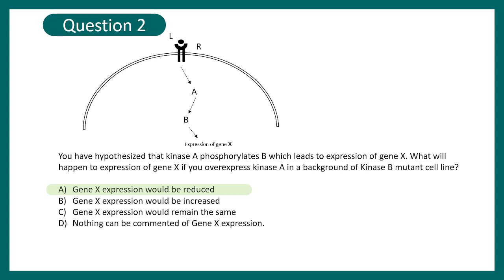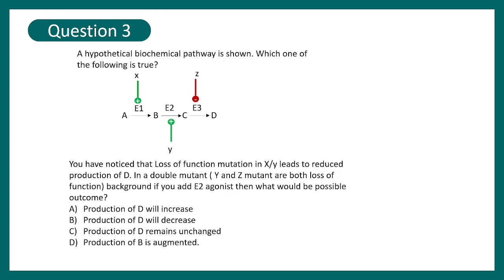So there would be a fail to rescue of this phenotype and the gene expression would be reduced as expected in just a kinase B mutant. Question three, a hypothetical biochemical pathway is shown and based on that you have a question. So you can see the biochemical pathway is like A goes to D in a subsequent four step process. A goes to B then goes to C then it goes to D.